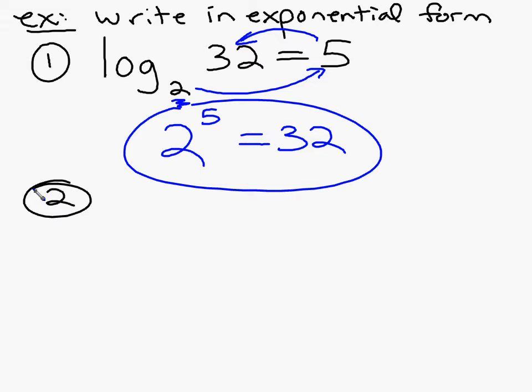How about this one? Log base 3 of 1 equals 0. I'll pause the video. You try that one on your own. Okay. That was a pretty short problem. We just do the switcheroo. It should have been 3 to the 0 power equals 1. And I think we all agree that anything to the 0 power equals 1.